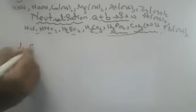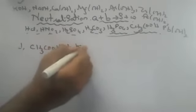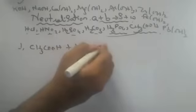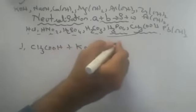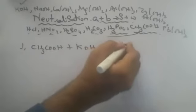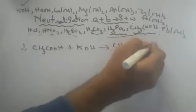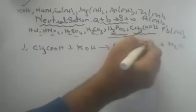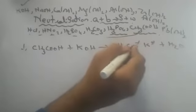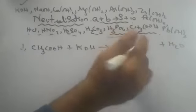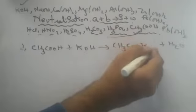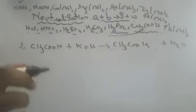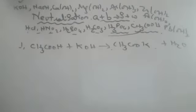First reaction: acetic acid with potassium hydroxide. CH₃COO minus plus K plus, plus H₂O. The plus one and minus one cancel. The formula of potassium acetate is CH₃COOK — it is well balanced.